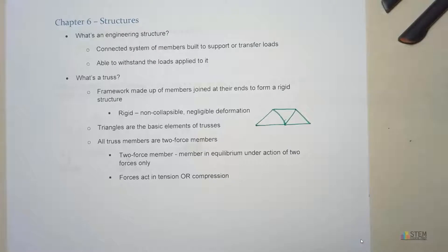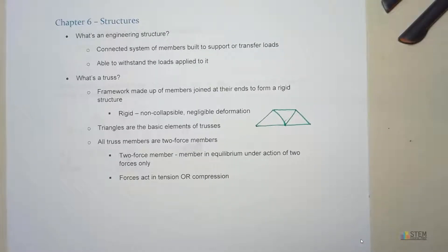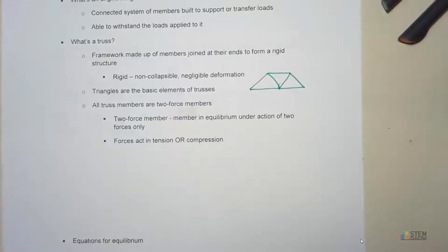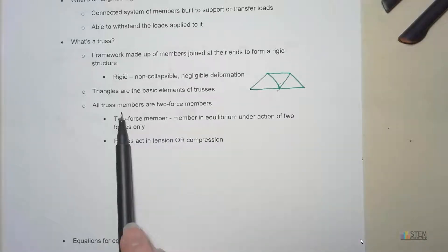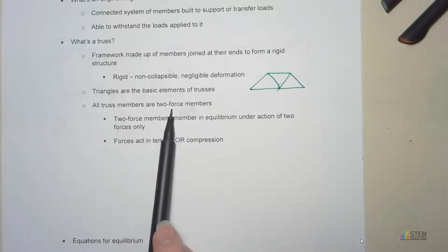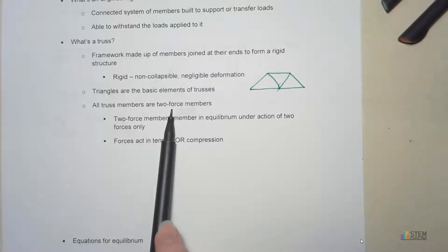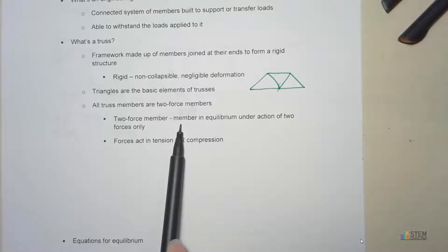And that's because the way the forces work out, they make up a good shape to use for these types of structures. Now, all of these truss members are going to be two-force members. And remember what a two-force member is. It's just a member in equilibrium under the action of two forces only. And our forces are going to act in tension or compression.